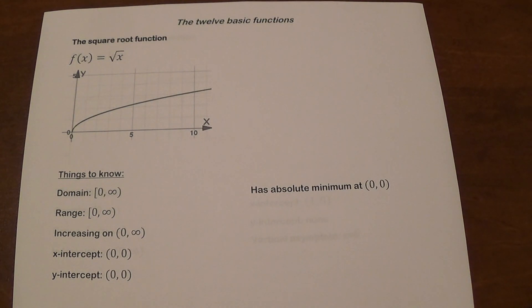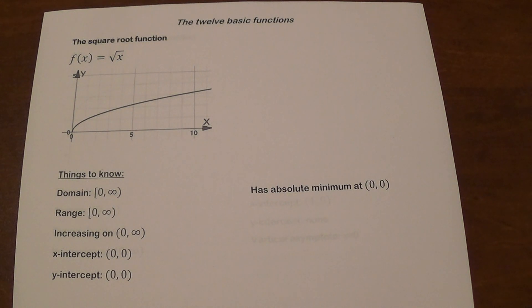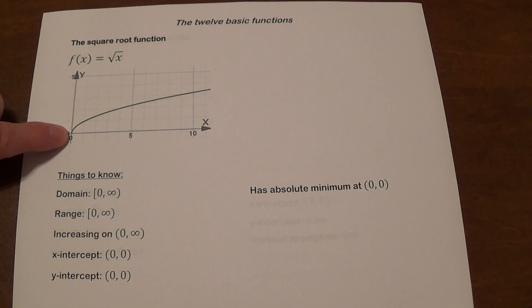The next one is the square root function, f of x equals square root of x. This one is restricted in its domain because you cannot take the square root of a negative number and plot it. So the domain is from 0 inclusive to infinity, and the range is also from 0 inclusive to infinity. This function increases on its entire domain, has its x and y intercepts at the origin, and has an absolute minimum at (0, 0).